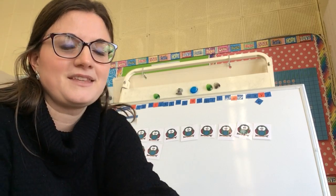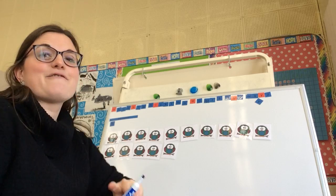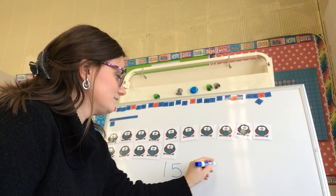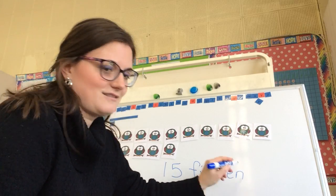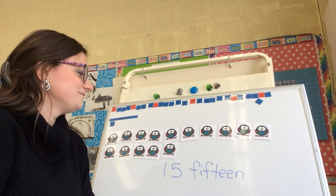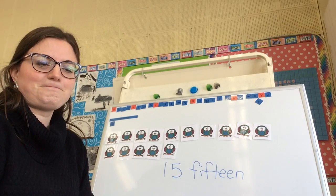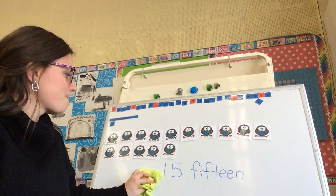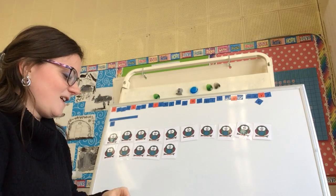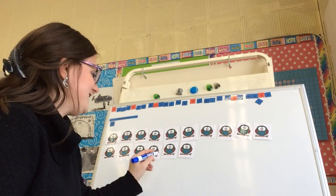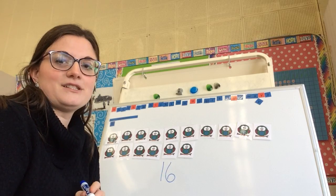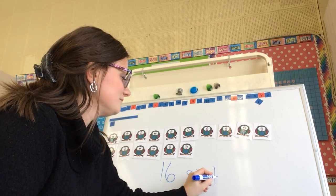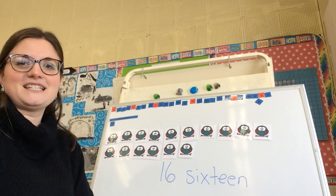And what comes after fourteen? Fifteen. So now we have fifteen. And if I add another owl, we're going to see the next one. I have sixteen. You'll notice I write the number six and I add the teen. Sixteen.